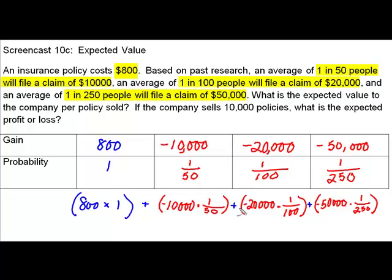Close the parenthesis, plus, open the parenthesis, negative 50,000 times 1 divided by 250. Close the parenthesis, then press enter. If you have done the computations correctly, you will have found that the average gain per policy sold to the insurance company is $200.